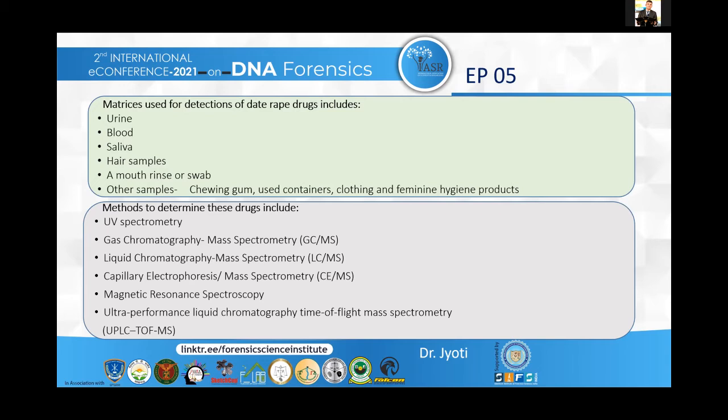The matrices used for detection include urine, blood, saliva, hair samples, mouth rinse, swabs, or other samples such as drinks or food containers used by the victim. The methods generally used to detect such drugs include UV spectrophotometry, gas chromatography coupled with mass spectrometry (GC-MS), liquid chromatography with MS (LC-MS), capillary electrophoresis with MS, and magnetic resonance spectroscopy. Many advanced techniques have now been developed, including UPLC coupled with MS.